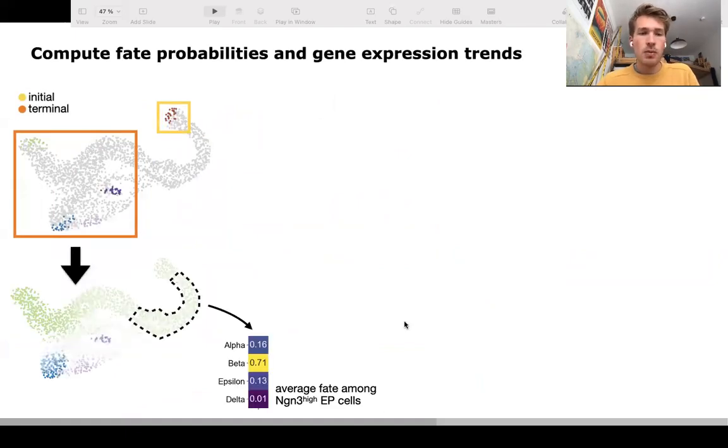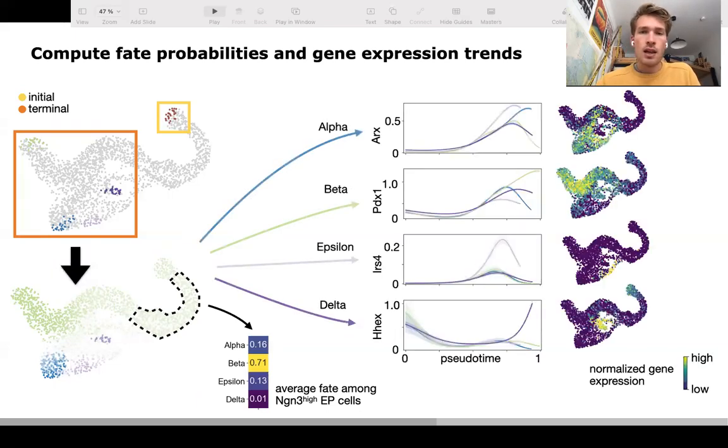We were then able to compute the fate probabilities, which told us that the beta endpoint is the dominant state of the system, which makes sense biologically. And given the fate probabilities, we could then compute gene expression trends for the main driver genes in the system.